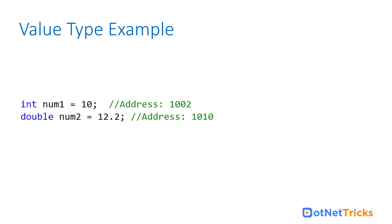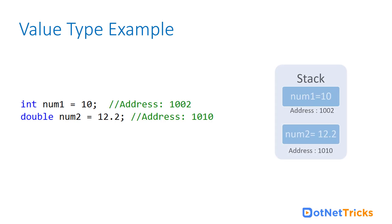Let's understand with an example. Let's say we have two numbers here — num1 is of type integer and num2 is of type double, and both are value types. So if you are talking about the memory representation for these two variables, let's say the num1 memory address is 1002 and the num2 memory address is 1010. So in the stack, they are going to be stored as shown in this diagram.